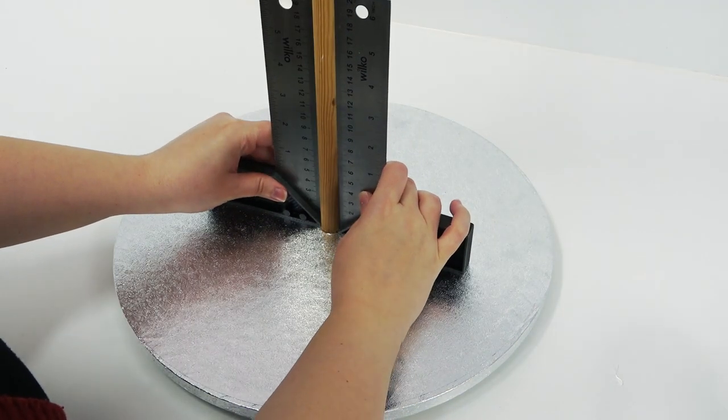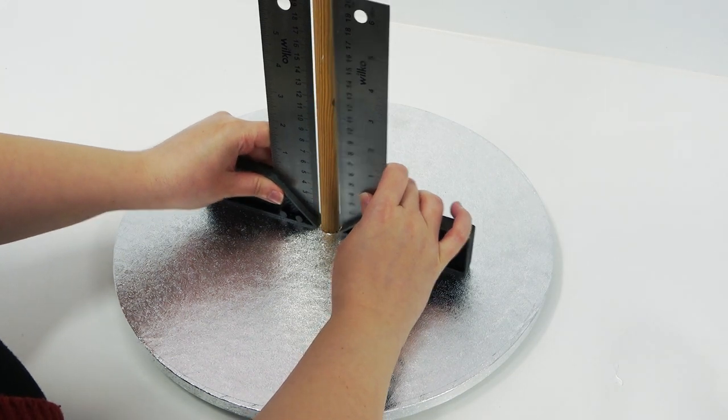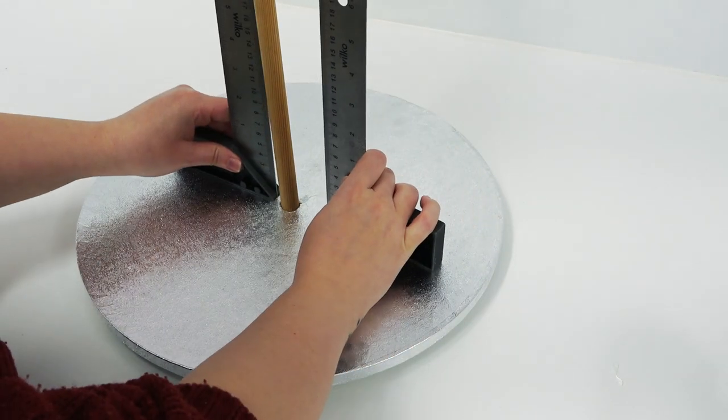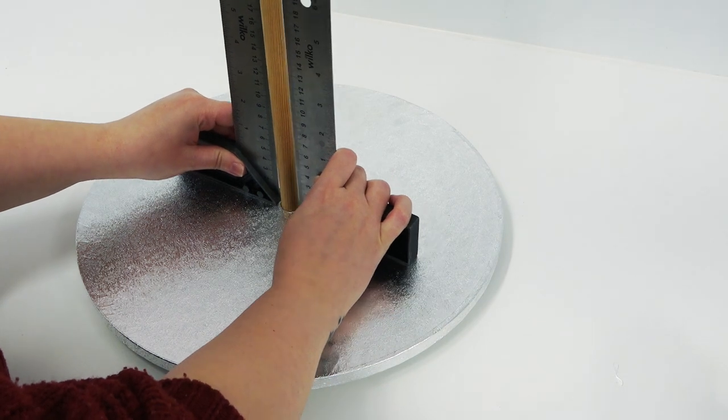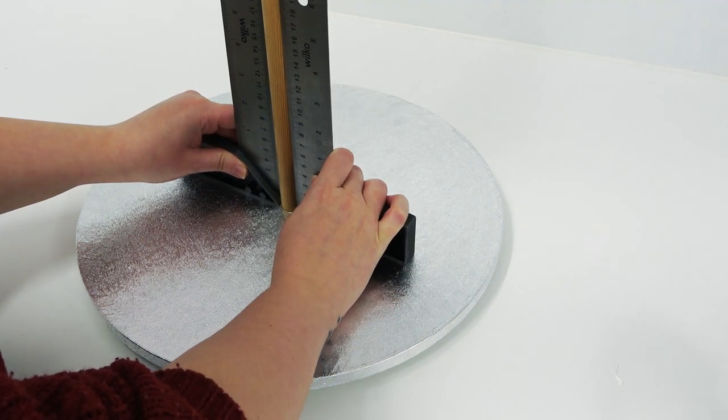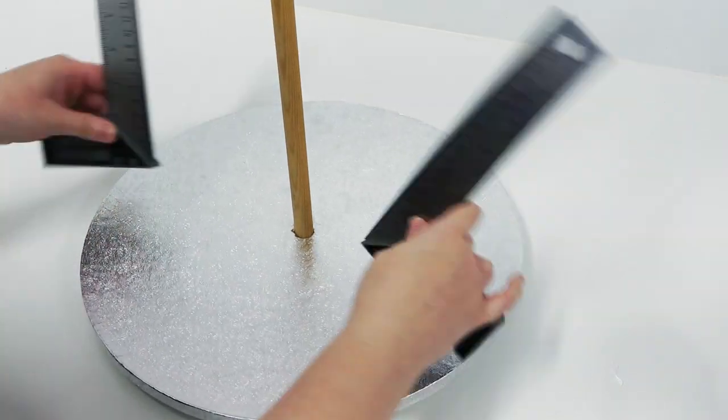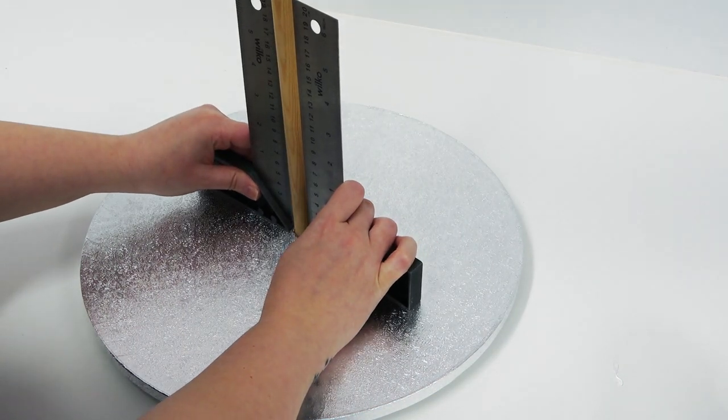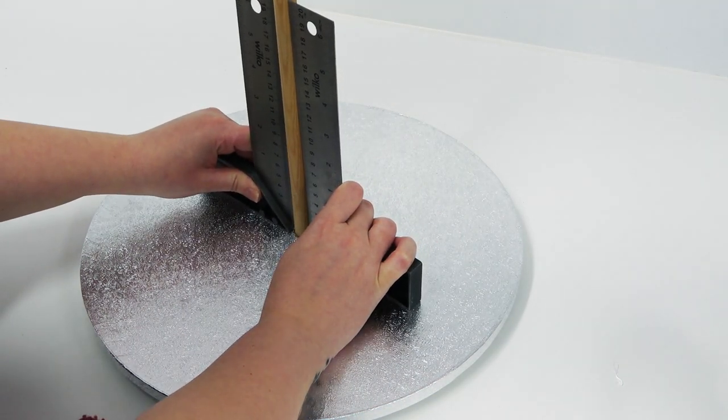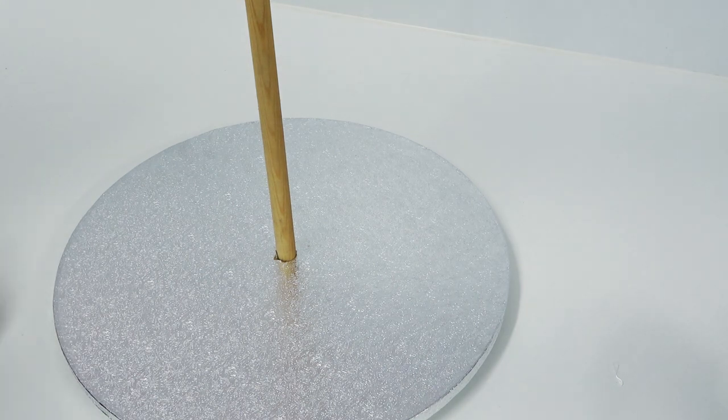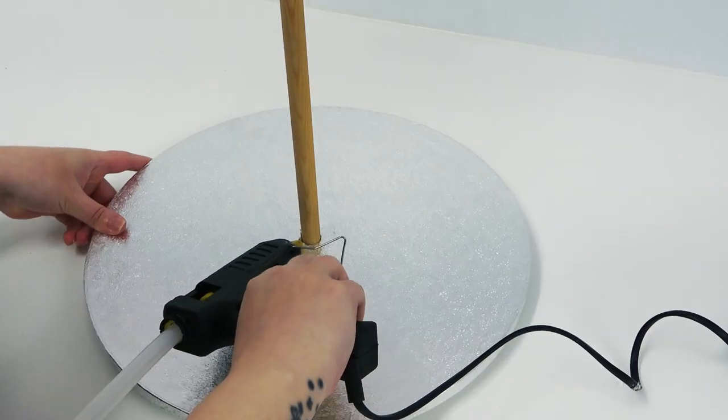Then take two scrapers or set squares to make sure your dowel is level all the way around. For the height of your dowel I usually just measure the height of my cakes and make sure it finishes just as it enters the top tier so it doesn't risk poking out the top. Once you've levelled the dowel leave it to set and then go in around the base for extra security.